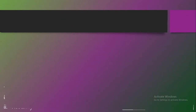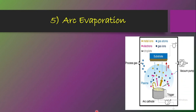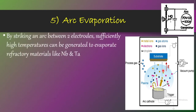The next approach is arc evaporation. The setup is similar, with released gases pumped out using a vacuum pump. For evaporation, an arc is struck between two electrodes of conducting material, generating sufficiently high temperatures. Due to these high temperatures, the target material — mainly refractory metals or materials like niobium or tantalum — evaporates and condenses over the substrate forming a thin film.